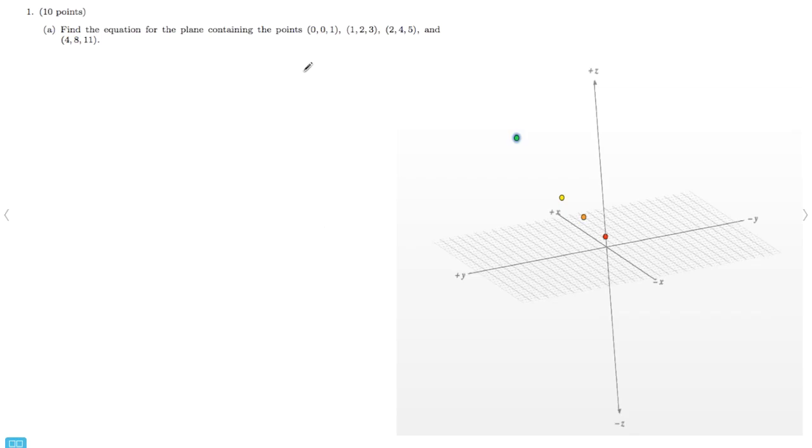Alright, so in this problem we're given four points, let's call them A, B, C, and D, and we're asked to find the equation of the plane that contains these points. So I plotted them on this little graph here, and you can see that they're sort of linear, but that doesn't really matter because that won't really help us in this problem.